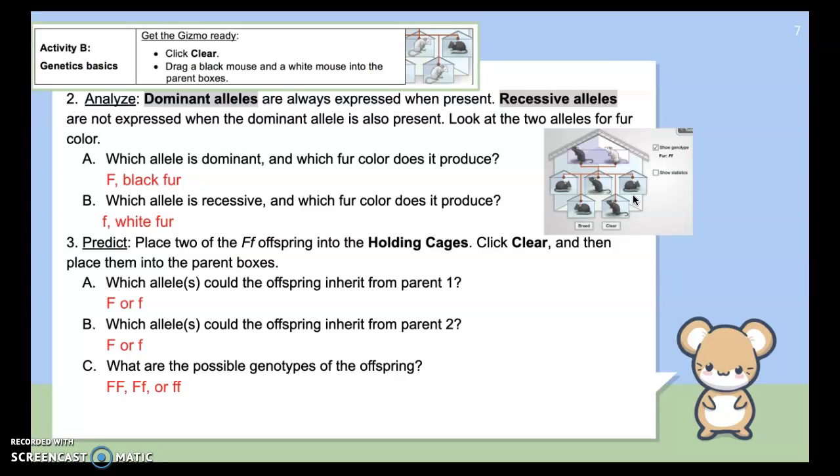So now it says in step two to analyze your information. 2A says which allele is dominant and which fur color does it produce? Well, as I stated earlier, the dominant allele is written with the capital letter. So the black fur color is dominant and the one that's written with a lowercase letter is recessive. So for B, the little f represents the white fur color.